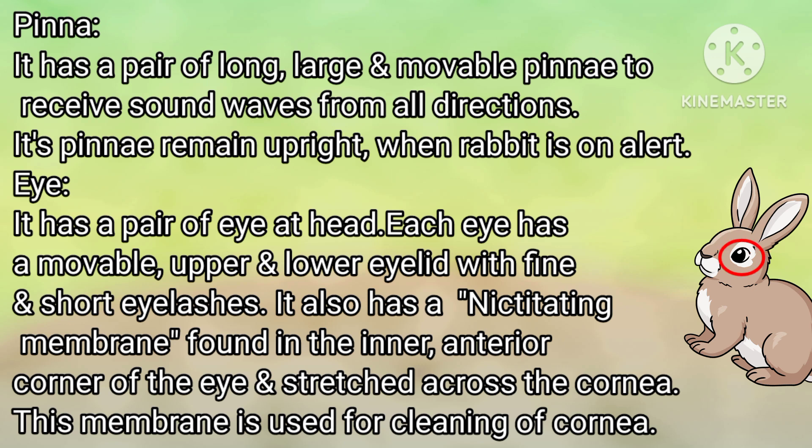Eyes: It has a pair of eyes on the head. Each eye has a movable upper and lower eyelid with fine, short eyelashes. It also has a nictitating membrane found in the inner anterior corner of the eye, stretched across the cornea.